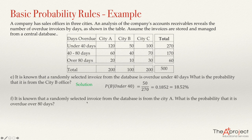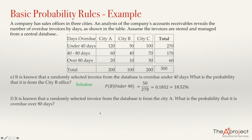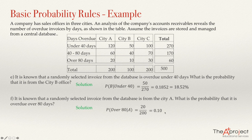It is known that the randomly selected invoice is from the CDA. What is the probability that it is overdue over 80 days? We know it is one of the 200 invoices in the first column. Of those, 20 are overdue more than 80 days. So P(over 80 days | CDA) equals 20 over 200, which is 0.1 or 10%.